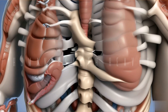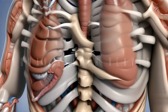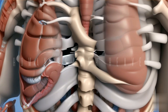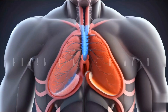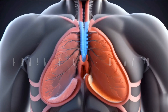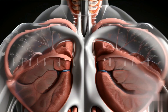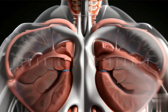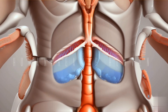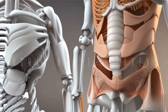Relaxation during exhalation: during exhalation, the diaphragm relaxes and returns to its dome shape. This decreases the thoracic cavity volume, creating positive pressure that facilitates the expulsion of air from the lungs. Division of thoracic and abdominal cavities: the diaphragm acts as a partition between the thoracic and abdominal cavities. It ensures that the organs in the abdominal cavity are separated from the organs in the thoracic cavity, including the lungs and heart.